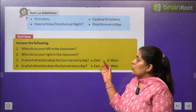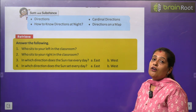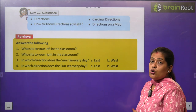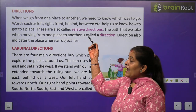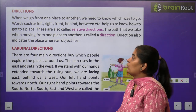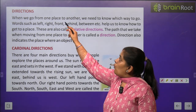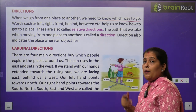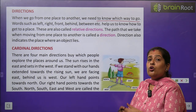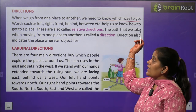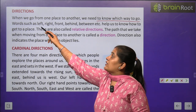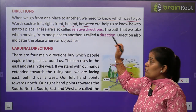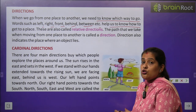First we start the chapter — you have to give answers to the following questions. So my dear students, you have to read these questions and give answers by yourself. Direction — direction क्या होती है? When we go from one place to another, we need to know which way to go. अगर हम एक जगह से दूसरी जगह जा रहे हैं, तो हमें पता होना चाहिए कि हमें कहां जाना है। तो हम कुछ words का use करते हैं: Left, right, front, behind, between, etc.